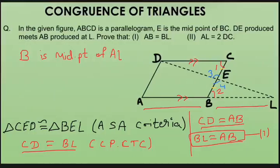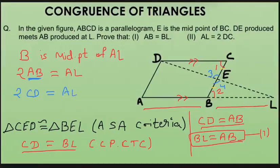Since B is the midpoint of AL, twice AB equals AL. And since opposite sides of a parallelogram are equal, we replace AB with CD. Therefore twice CD equals AL, which is our second required result.